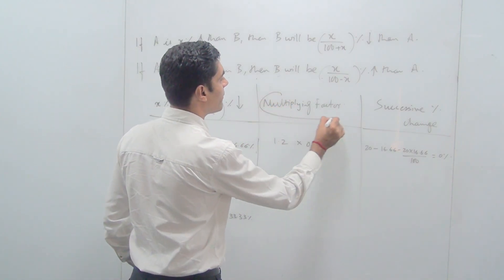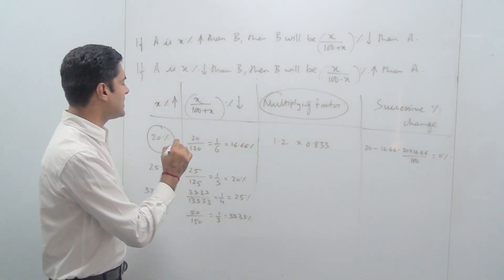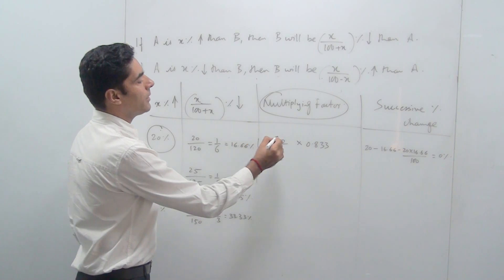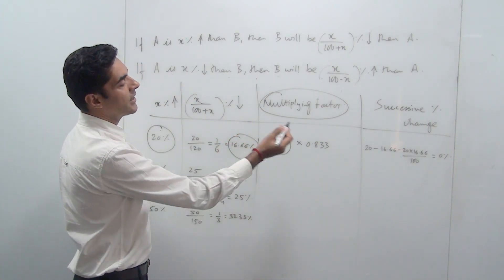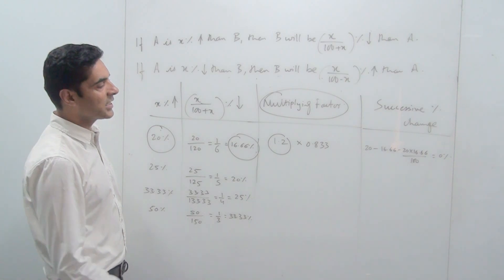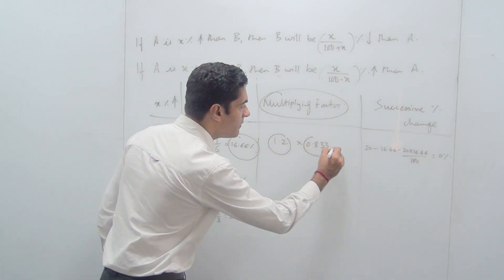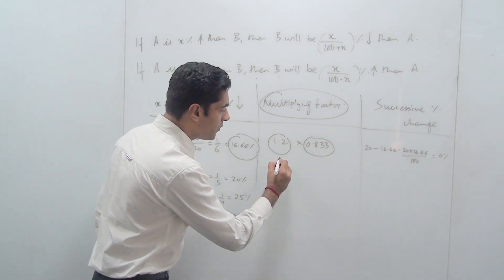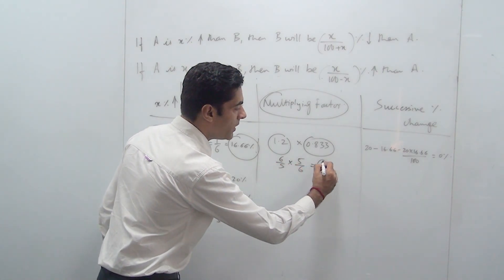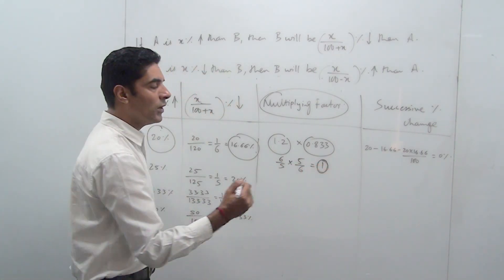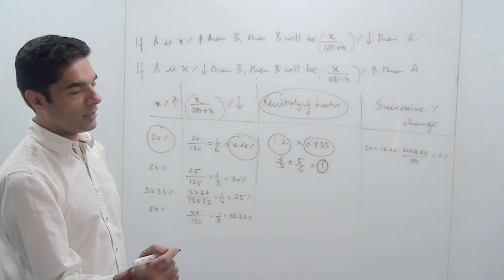Now I am applying the concept of multiplying factor. The multiplying factor says that in case there is an increase of 20 percent, the multiplying factor is 1.2. In case there is a decrease of 16.66, it is 100 minus 16.66 which is 83.33. Please don't multiply this but convert this into fractions. This is 6 by 5, this is 5 by 6. This value comes out to be equal to 1. If it comes out to be equal to 1, that means there is no change.